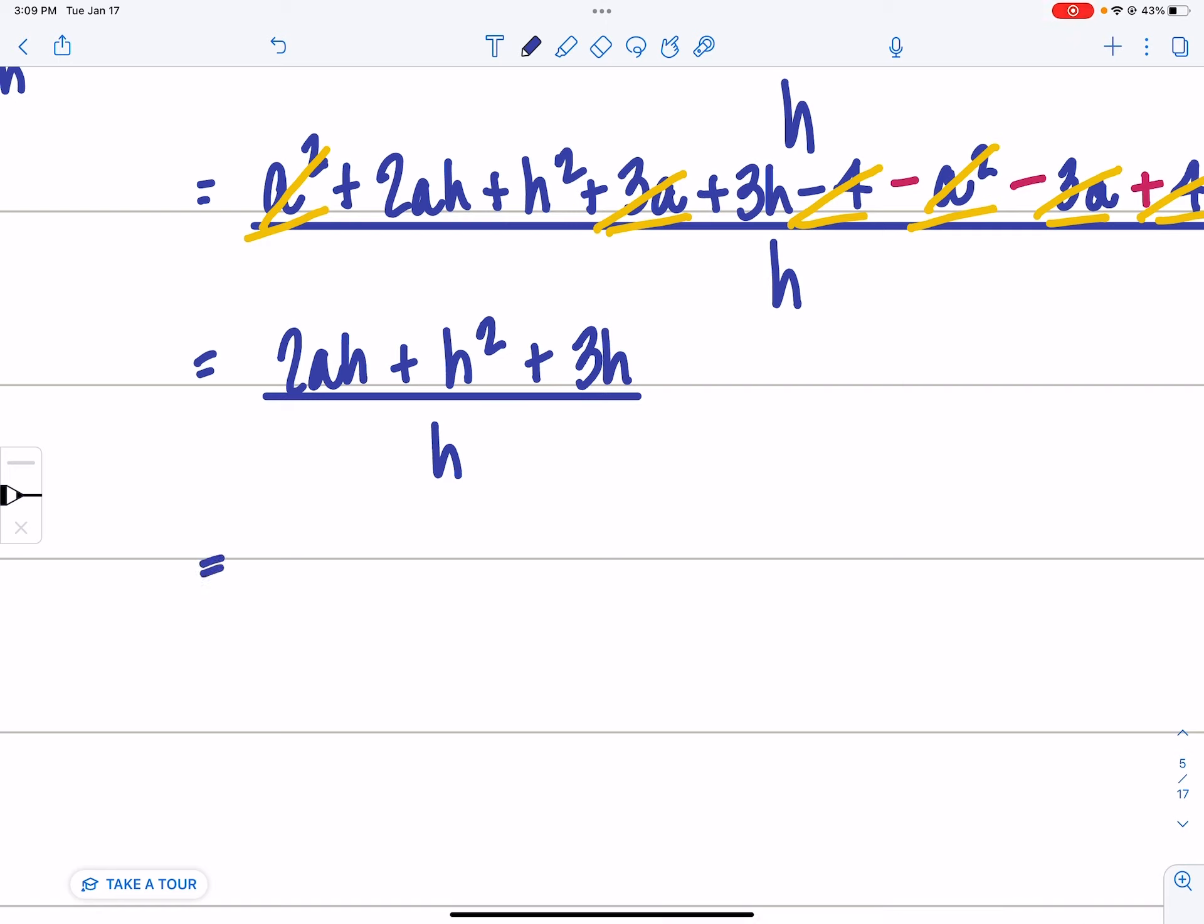Now I notice that everything in the numerator has an h, so I'm going to factor out my greatest common factor. So that means I'm going to put an h in the front and all of my leftovers still in the parentheses. So this is going to be 2a plus h plus 3.